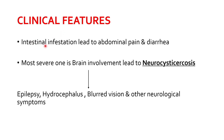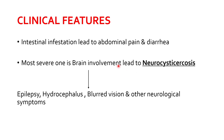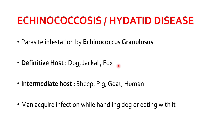The clinical features of Taenia solium infestation: if the intestine is predominantly affected, the patient will have abdominal pain and diarrhea. The more severe concern is brain involvement, known as neurocysticercosis, in which the patient could have convulsions (epilepsy), raised intracranial pressure due to hydrocephalus, blurring of vision, and other neurological symptoms. Neurological symptoms will appear when larvae are deposited in the brain. That covers cysticercosis — now let's discuss echinococcus or hydatid disease.